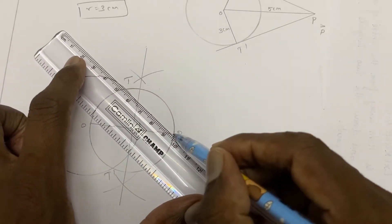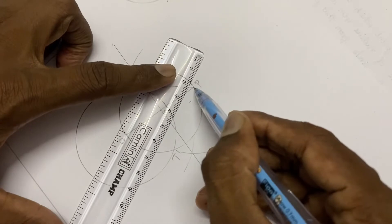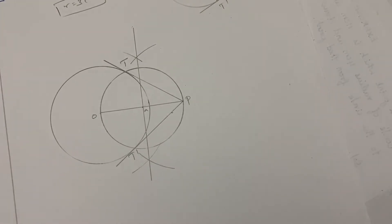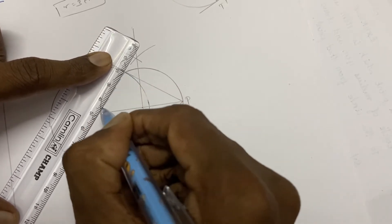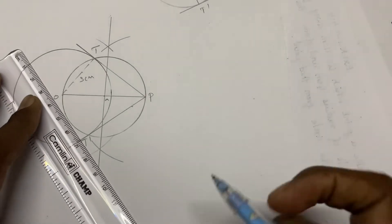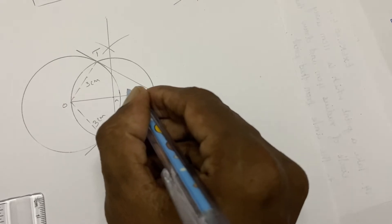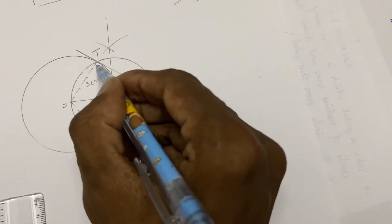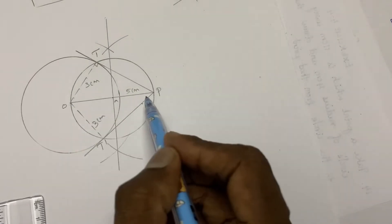The measurement of T-P and O is final. Join P to T-dash as well. The radius OT is 3 cm, and the distance OP is 5 cm. Since a tangent touches a circle at 90 degrees, angle OTP is 90 degrees, so TP is perpendicular to OT.